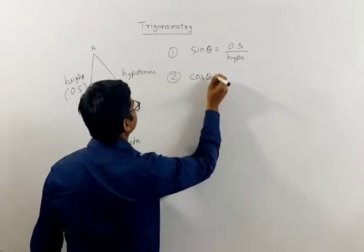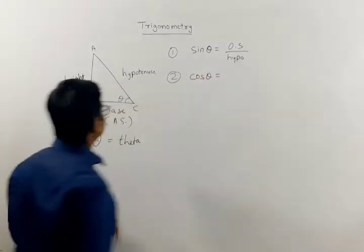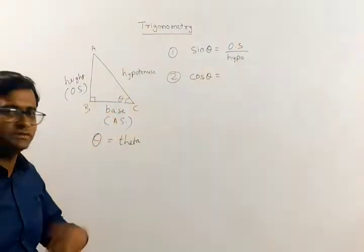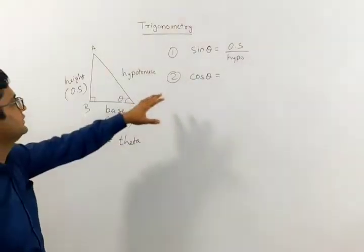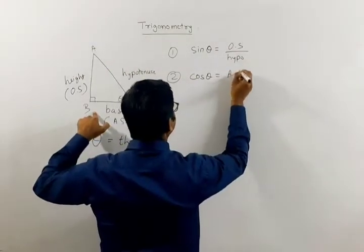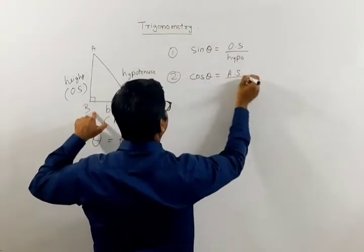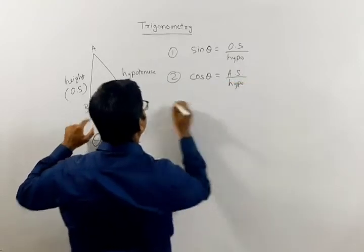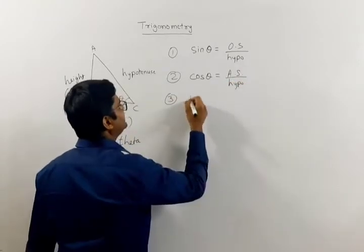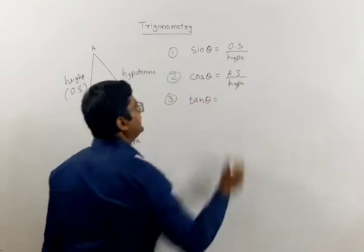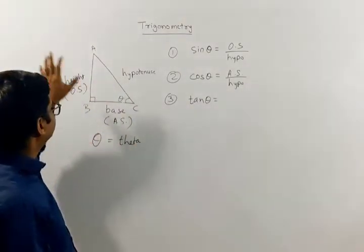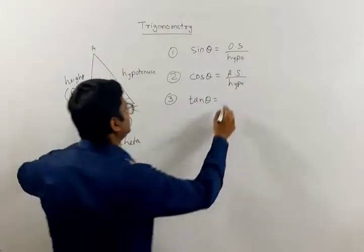The next ratio is called cos theta — its full form is cosine — and it is defined as adjacent side upon hypotenuse. The third ratio is tan of theta, and it is defined as opposite side upon adjacent side.